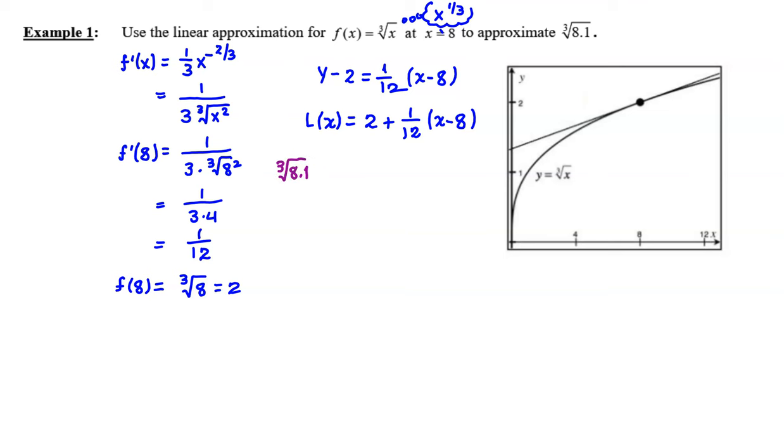Because if our job is to find an approximation for the cube root of 8.1, all that is is f(8.1). We're just going to plug 8.1 for x in this function, but we know that that is approximately equal to L(8.1), which is 2 plus 1/12 times the quantity (8.1 minus 8).